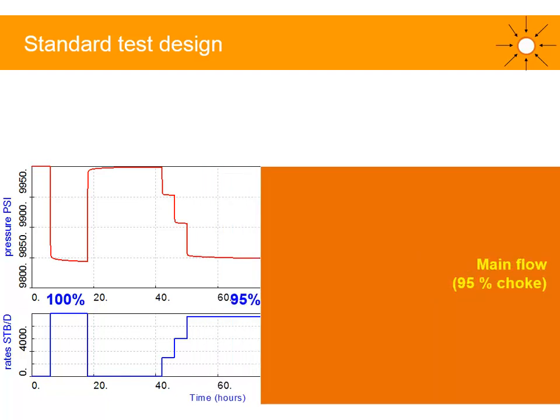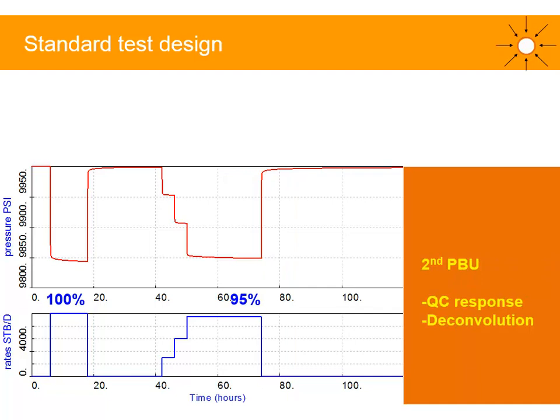Then the main flow period — we want to flow at maximum choke size, which gives us a bit of flexibility. And finally we have the second PBU. With two PBUs, we can quality check the response, assess deconvolution, and obtain a reliable deconvolved response. This helps us refine the initial pressure, see further away in the reservoir, and improve the understanding of the pressure transient analysis.